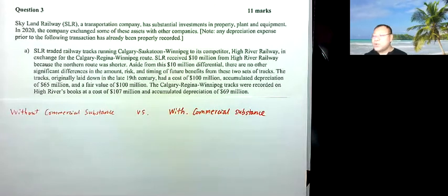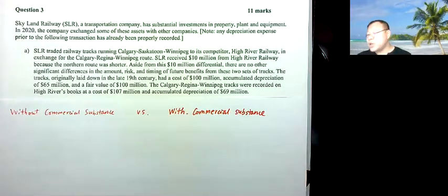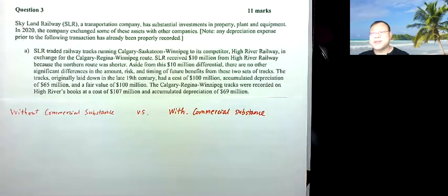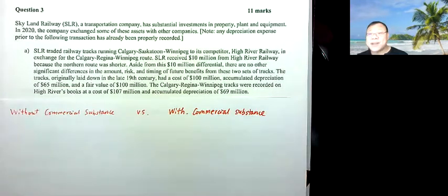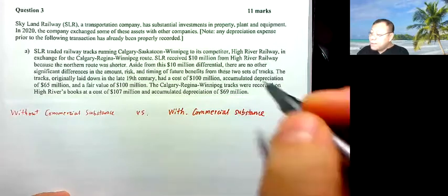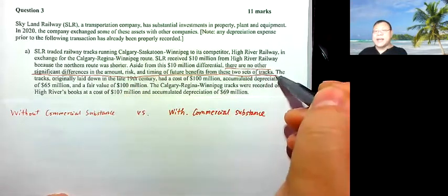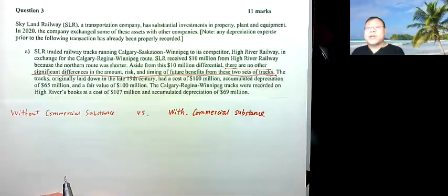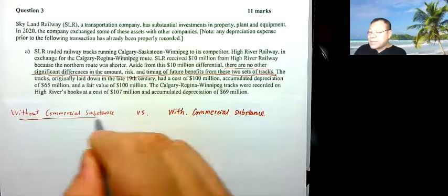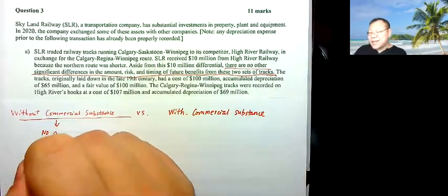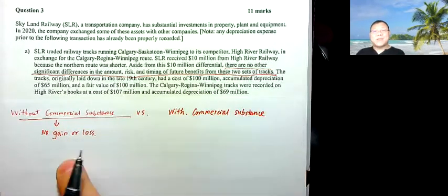So basically, when you exchange one item for another item, you want to evaluate whether the future cash flow configurations change. In this case, the answer is no commercial substance, because there is probably no significant difference in the amount, risk, or timing of future benefits from the two assets. This information tells me there is no commercial substance — and if there's no commercial substance, that means no gain or loss.